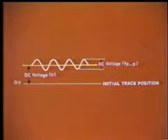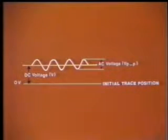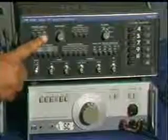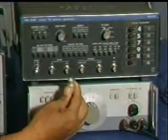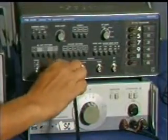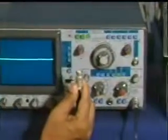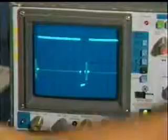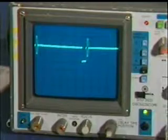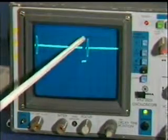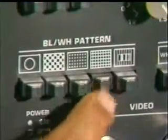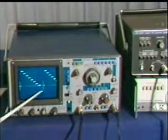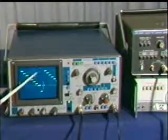Similarly, we can measure the DC voltage by measuring the shift of the trace with respect to the original position. The voltage of different types of wave shapes can also be measured in a similar way by counting the volt division position, the number of squares in the vertical scale, and by noting the probe attenuator factor.